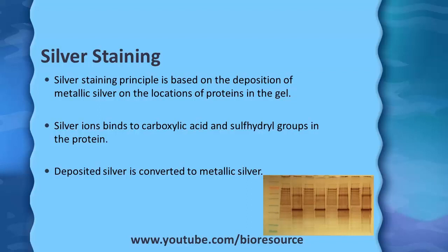The other method is silver staining. The principle of silver staining is based on the deposition of metallic silver at the locations of proteins in the gel. It is a very sensitive technique wherein silver ions get deposited on the proteins. The silver ions bind to carboxylic acid and sulfhydryl groups in the protein. In the later stages, the deposited silver is converted into metallic silver and the bands develop as brown-colored bands.